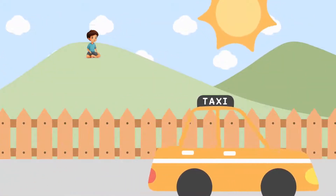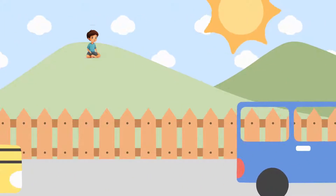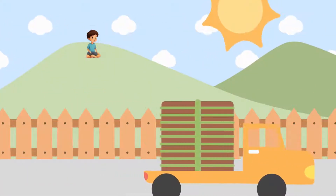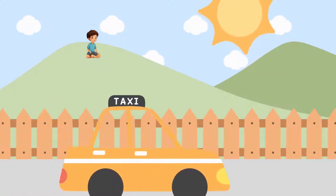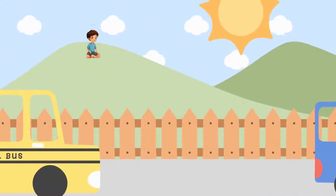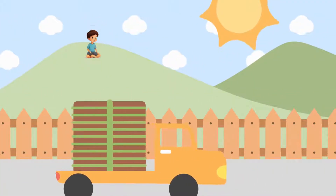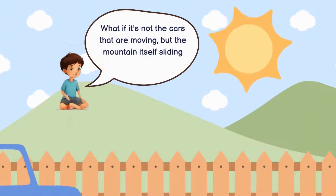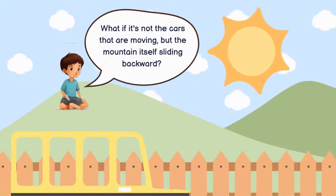Hey, friends. Have you ever wondered how the world moves around you while sitting still? Imagine this: you're relaxing on a mountainside, taking in the breathtaking view. Below you, vehicles are winding their way along the roads beneath the mountain. But here's a thought — what if it's not the cars that are moving, but the mountain itself sliding backward? How can you tell the difference?